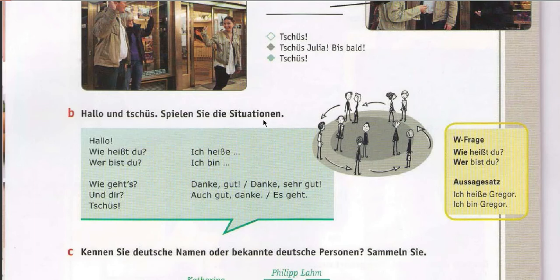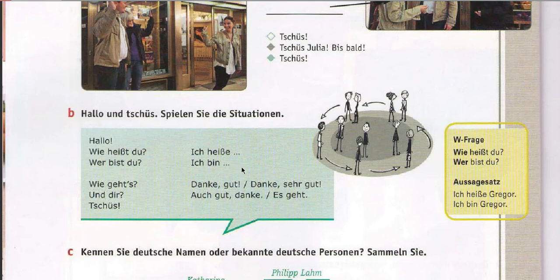'Hallo und Tschüss.' Play these dialogues with your friends and shuffle. 'Hallo. Wie heißt du?' — What's your name? 'Ich heiße Amjad.' — Just write your name here. 'Wer bist du? Ich bin Amjad. Ich bin Lisa. Ich bin Angelika. Ich bin Schüler. Ich bin Schneider. Ich bin Müller.' 'Wie geht's? Danke, gut. Sehr gut. Und dir? Auch gut. Danke.'